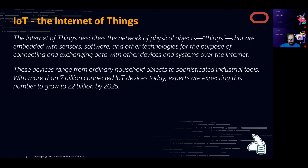IoT ranges from ordinary everyday objects to very sophisticated industrial tools. Currently we estimate about 7 billion connected IoT devices today, and experts are expecting even bigger growth — to 22 billion by 2025. That's a lot of data we need to process, and we're going to see together how we can handle it.